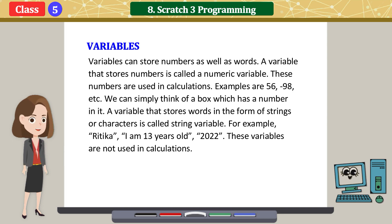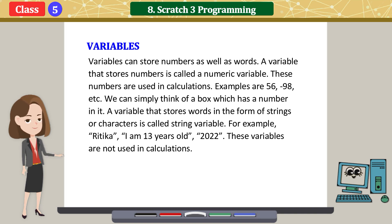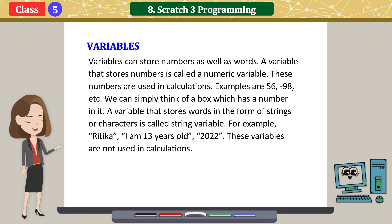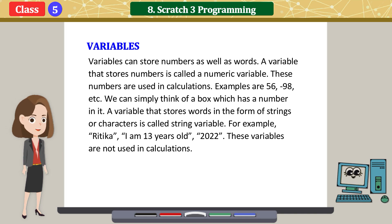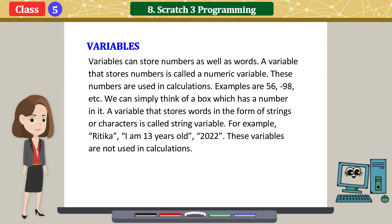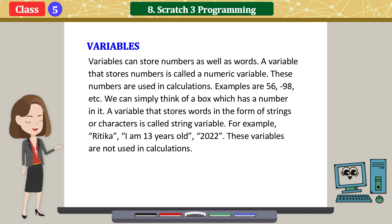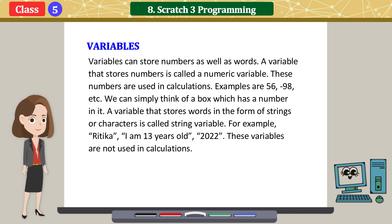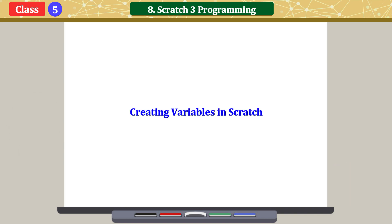Variables can store numbers as well as words. A variable that stores numbers is called a numeric variable; these numbers are used in calculations. Examples are 56, minus 98, etc. A variable that stores words in the form of strings or characters is called a string variable — for example, 'Rithika', 'I am 13 years old', '2022'. These variables are not used in calculations.